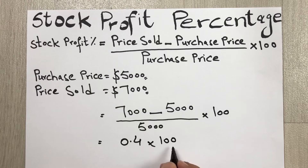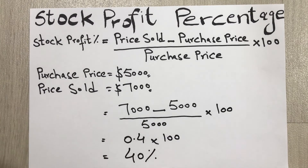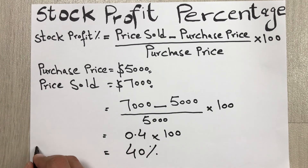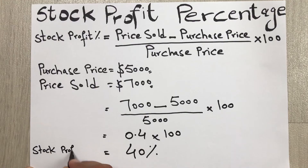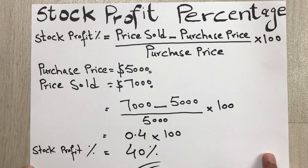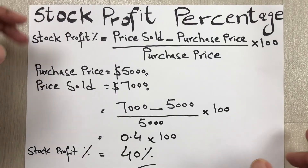We simplify this part first: the answer is 0.4, and then multiplying by 100 gives us 40 percent. So this is our stock profit percentage — 40 percent.